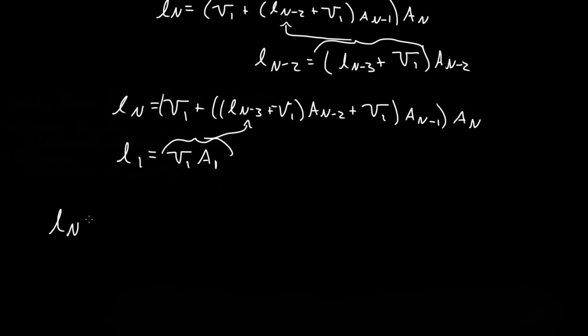...equal to V_1 times A_1, A_2, A_3, A_4, dot dot dot, A_n. So that's all the way to A_n, plus A_2, A_3, A_4, and then you continue on...